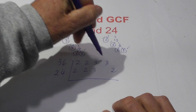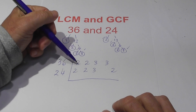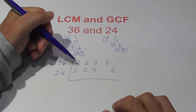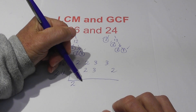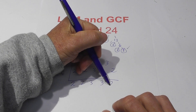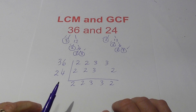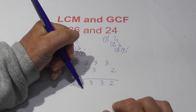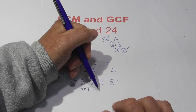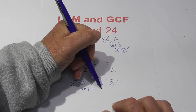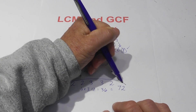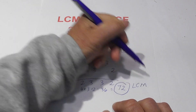For the LCM, you basically multiply these together. But if you have more than one prime number in a column, you just bring down 1. So I am going to bring down 1, 2, bring down 1, 3, and then bring down the 3 and the 2. Now just multiply this together: 2 times 2 is 4, times 3 is 12, times 3 is 36, times 2 is 72. So the LCM is 72.